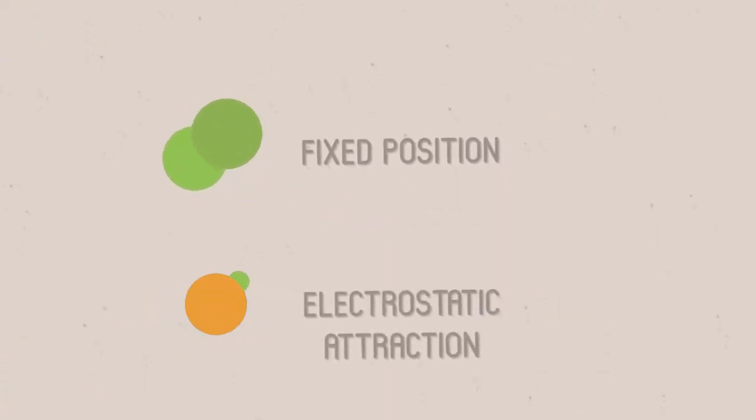Covalent bonds are directional, which means they are in a fixed position, like holding hands. This is different from ionic bonds, which are formed with an electrostatic attraction between charged ions.